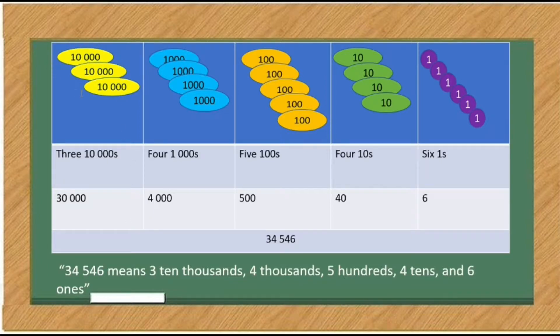3 ten thousand disks is equal to 30,000. 4 one thousand disks is equal to 4,000. 5 hundred disks is equal to 500. 4 ten disks is equal to 40. And 6 one disks is equal to 6. So, 30,000 plus 4,000 plus 500 plus 40 plus 6 is equal to 34,546.